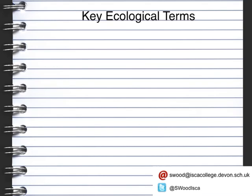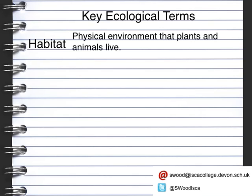There are quite a few key ecological terms that we need to be aware of. The first one is a habitat. A habitat is a physical environment that plants and animals live in. This can vary from a pond to a hedge to just a rock under which live woodlice. The size of the habitat can vary as well. A habitat has resources for organisms to live, so they need to be well suited — the organisms will have adapted to live in that specific environment and that specific habitat.